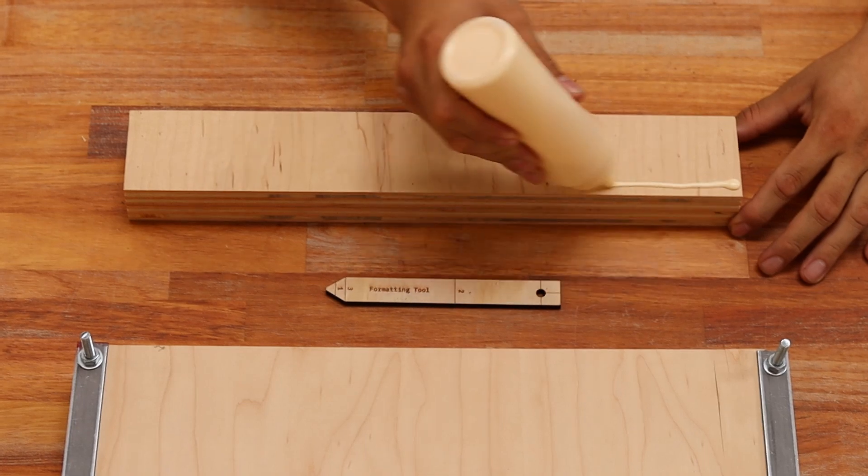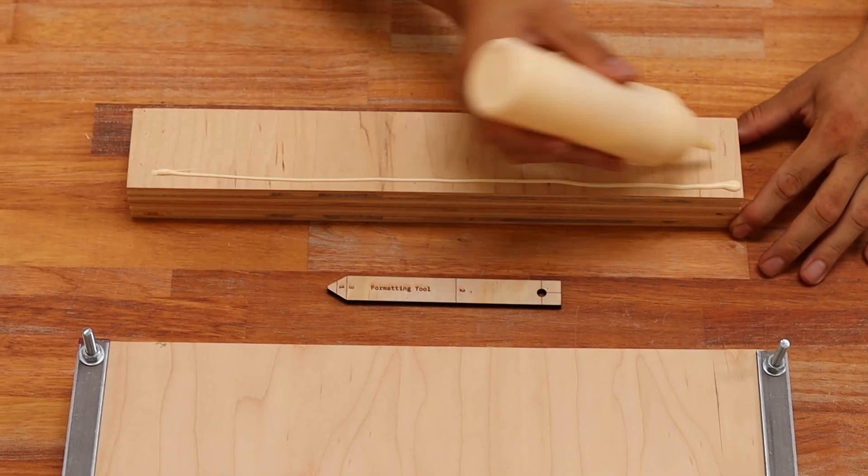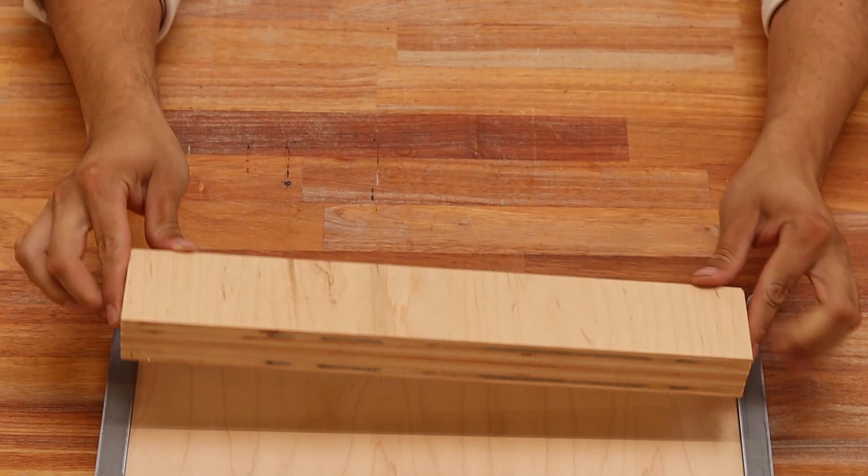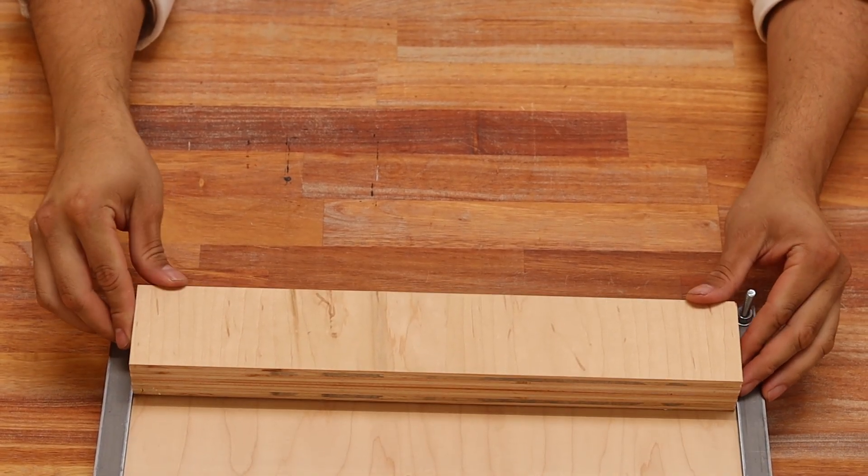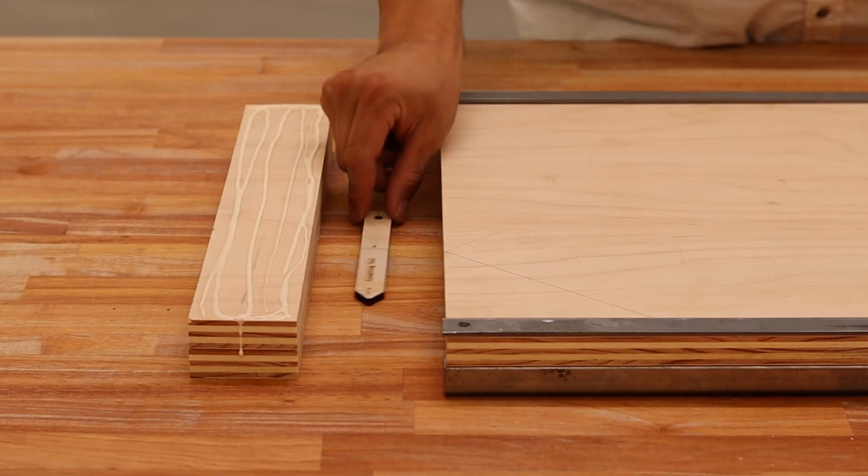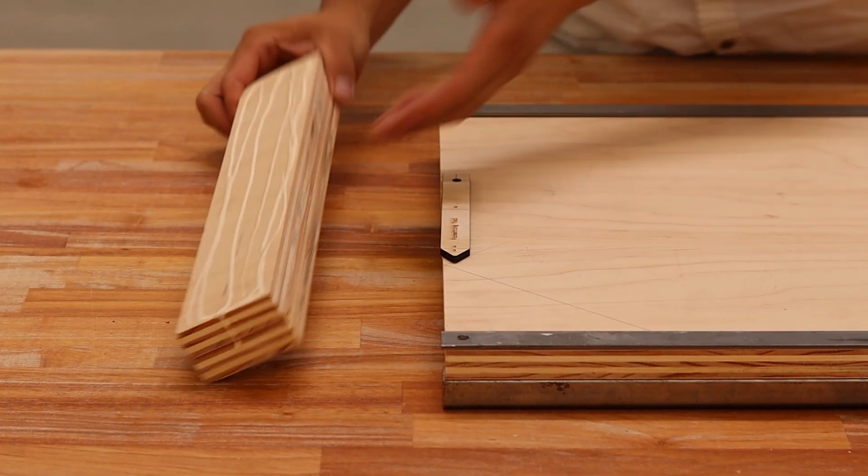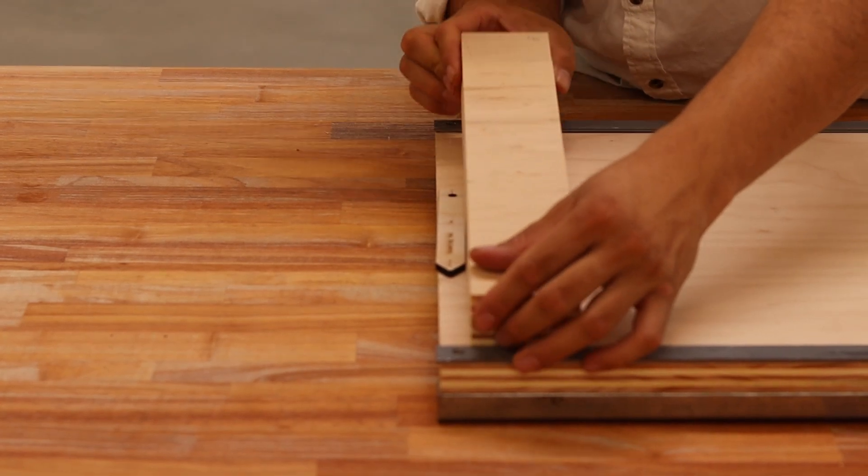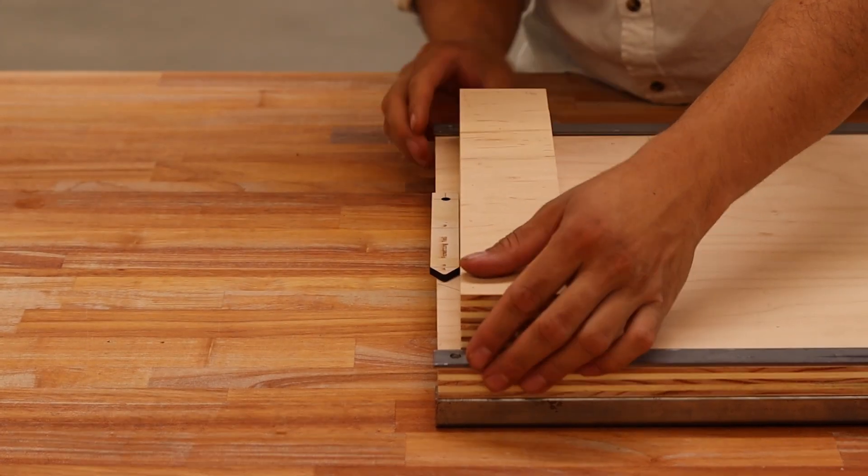Flip the press bed so that the side with the square tubing is face down. Use the width of the formatting tool to determine the placement of the press legs. Repeat this step on the other end for perfect symmetry. Glue or nail gun the legs to the press bed.